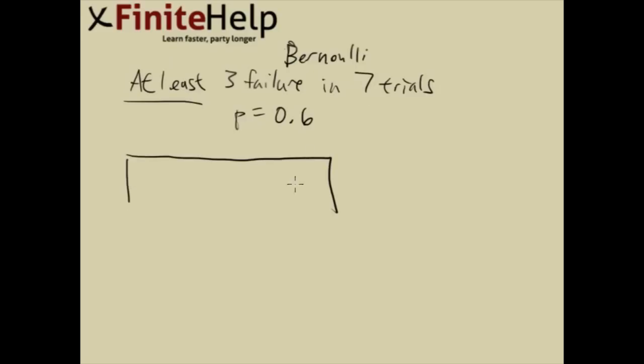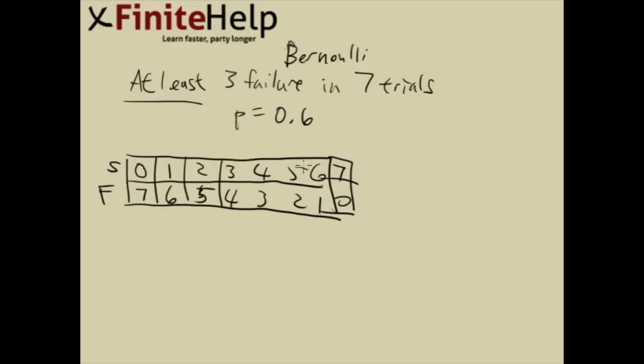Again, I represent my multi-scenario with a table. Here is the number of successes and the number of failures. When you have seven trials, the most extreme case is that you fail all seven times. And then you can succeed once, twice, three times, four times, five times, six times, or seven times. So here I've represented the spectrum of all that can happen when you have seven trials.